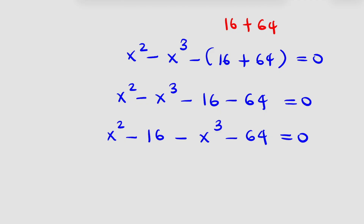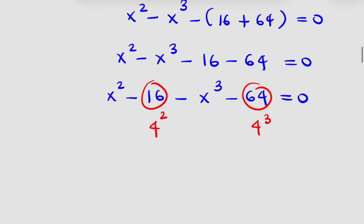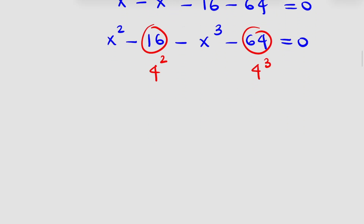Now, let us express 16 as 4 squared and 64 as 4 raised to power 3. This gives us x squared minus 4 squared minus x raised to power 3 minus 4 raised to power 3 is equal to 0.